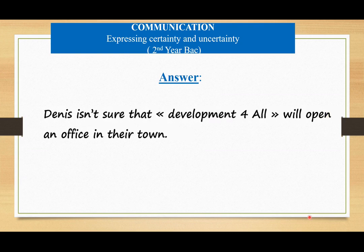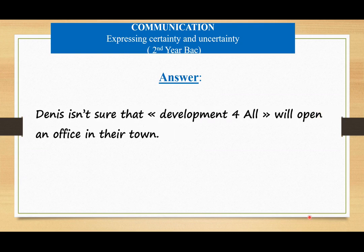What is Dennis not sure about? Shall we answer? Answer: Dennis is not sure that the Development for All association will open an office in their town. Our lesson, we said, is about certainty and uncertainty.